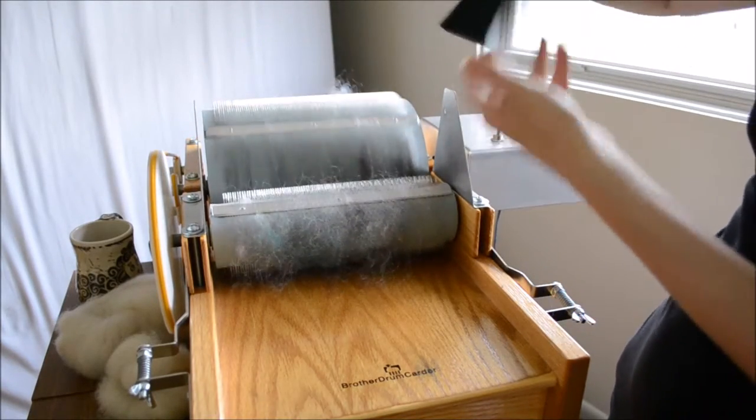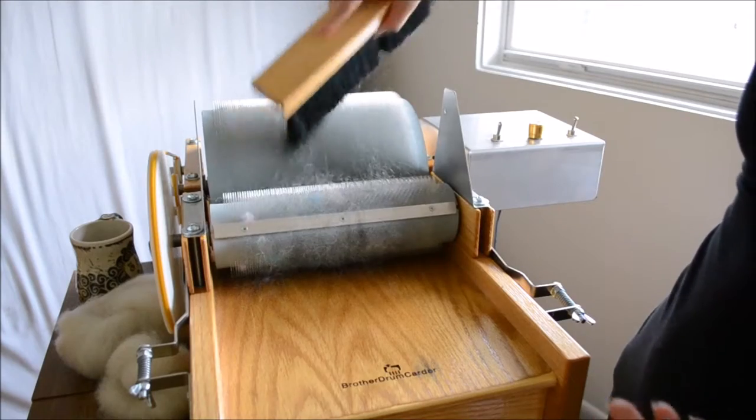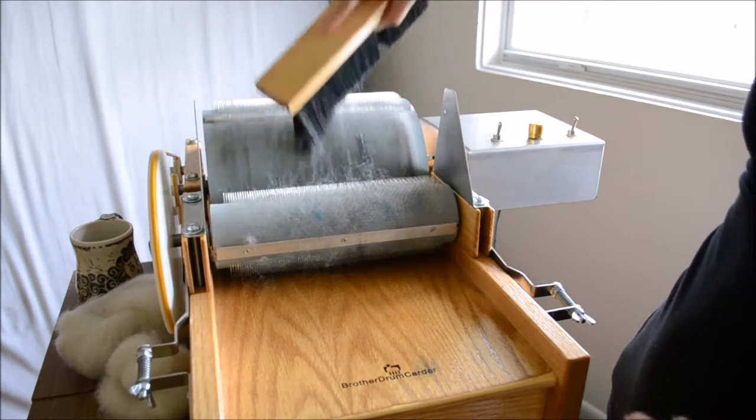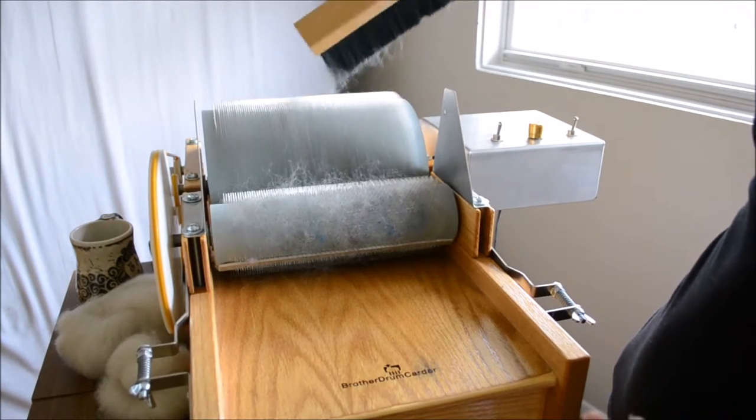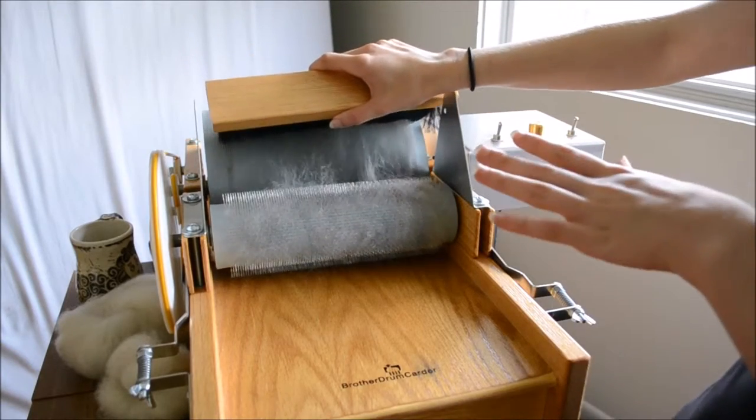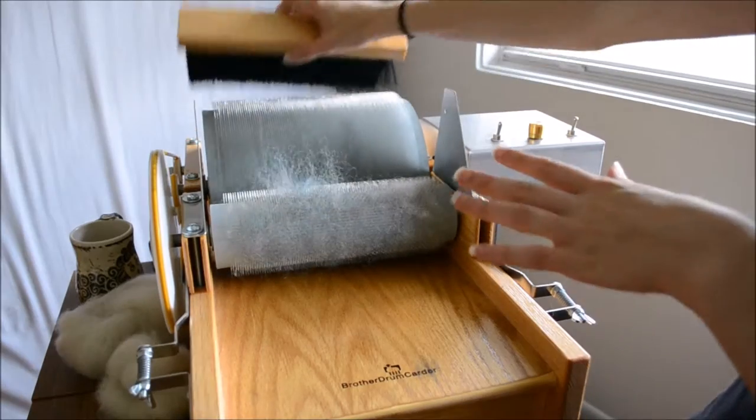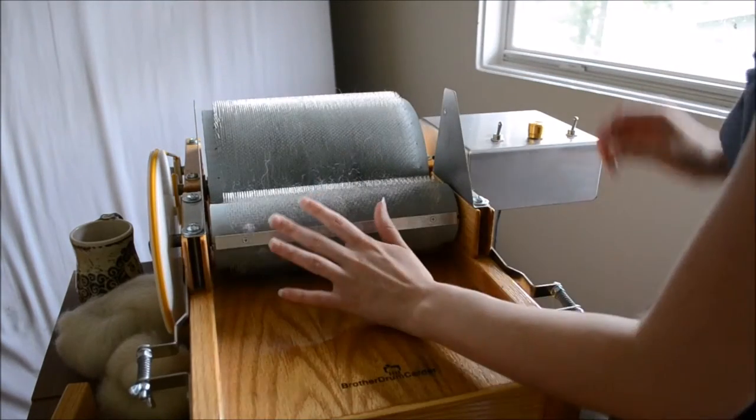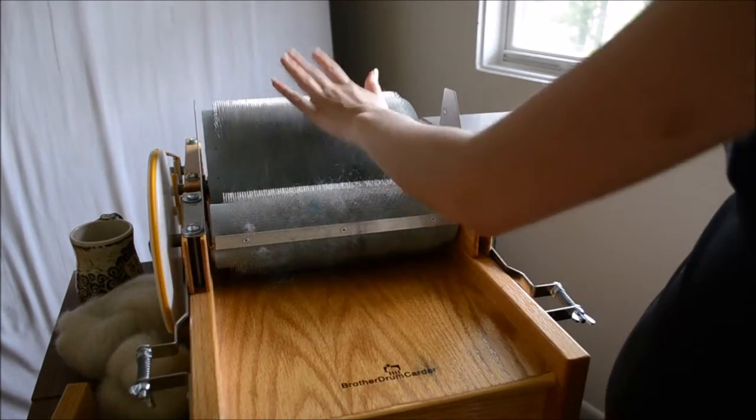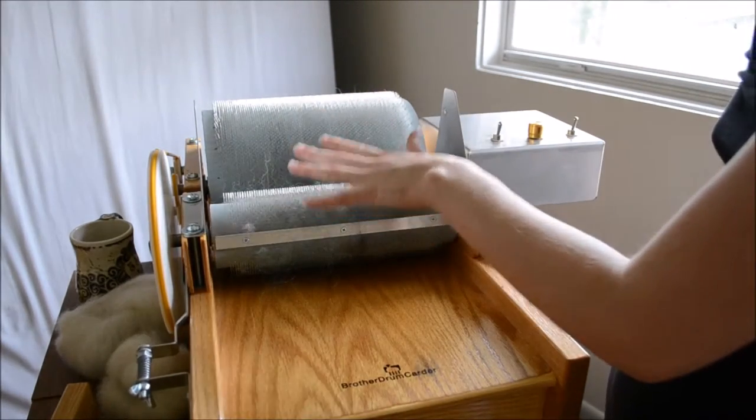You can also flick some fibers on, but the bristles aren't very stiff. But the main feature I like is that you can hold it and smush it. The next benefit of taking this off is you can clean your drum a lot easier.